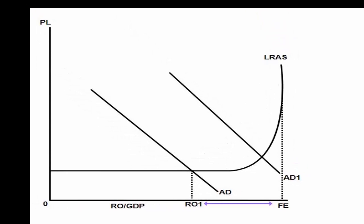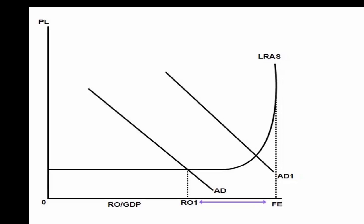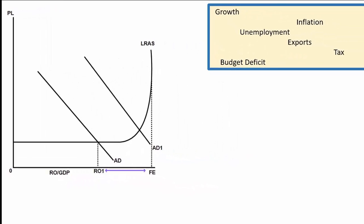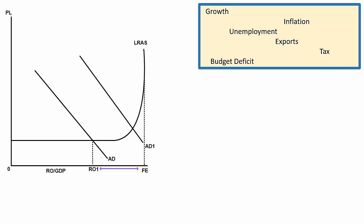We can also show inflation on this AD-AS graph as well because that's what the price level, PL axis, the y-axis shows. So price level means inflation. So we can show inflation, unemployment and growth on here but of course exports, tax and budget deficit all affect how aggregate demand moves whether it moves left or right. It also affects the position of the LRAS curve because that could move to the right as well. So all these concepts can all be shown diagrammatically or graphically through ADAS analysis.